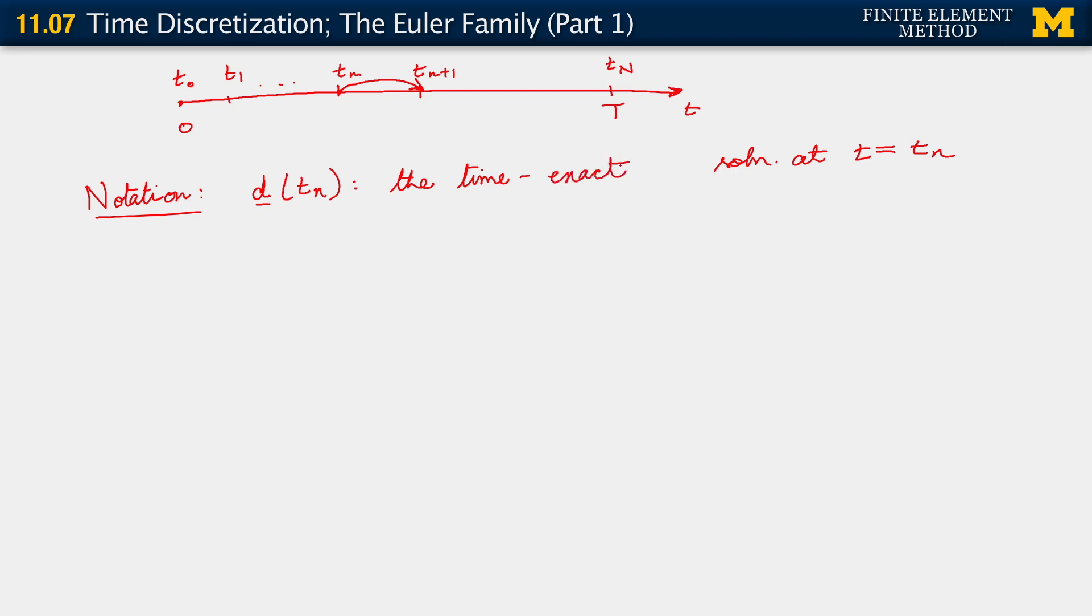This is our matrix vector ODE. If we were, this with initial conditions. If we had a method to exactly integrate this, then the solution that we would get at a given time tn would be this.